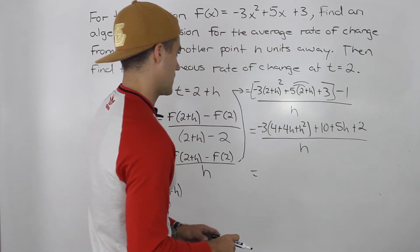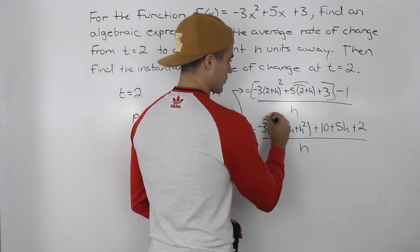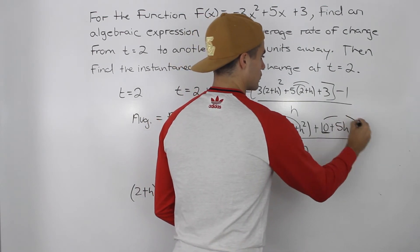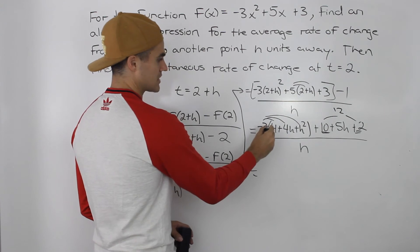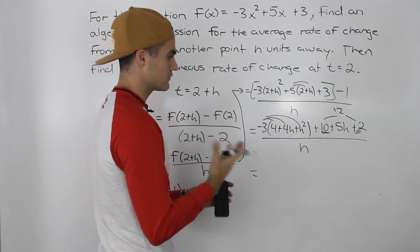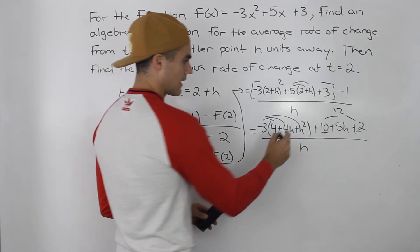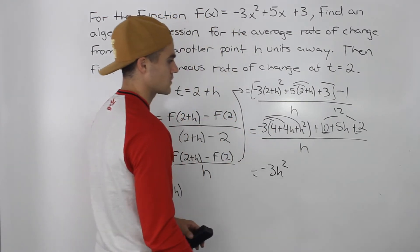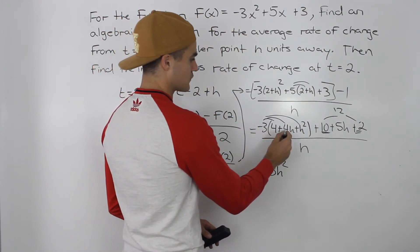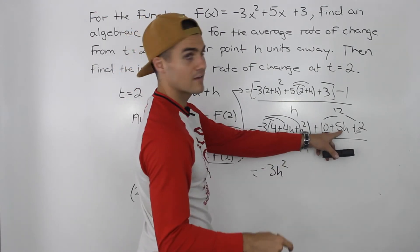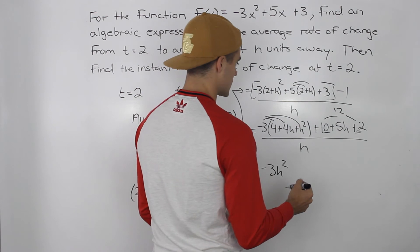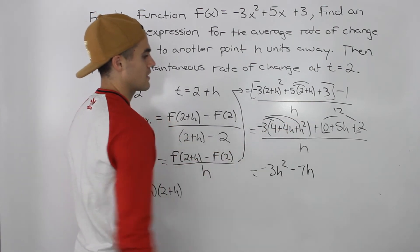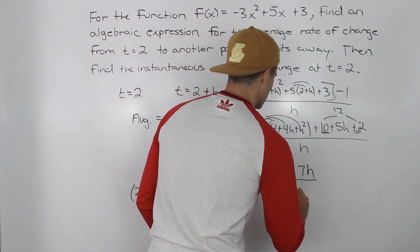Now distribute the negative 3 inside the bracket. Notice the 10 plus 2 are like terms giving us 12, and negative 3 times 4 is negative 12, so those 12's cancel out. We're left with negative 3h squared — from negative 3 times h squared — and negative 3 times 4h gives negative 12h, plus 5h, which are like terms giving negative 7h. This is all over h.